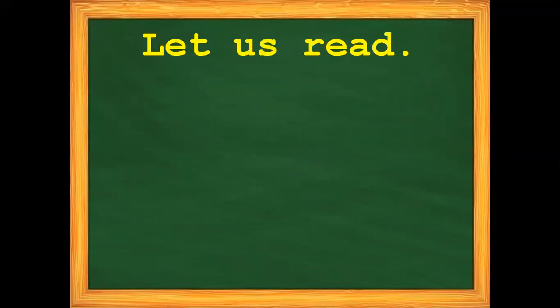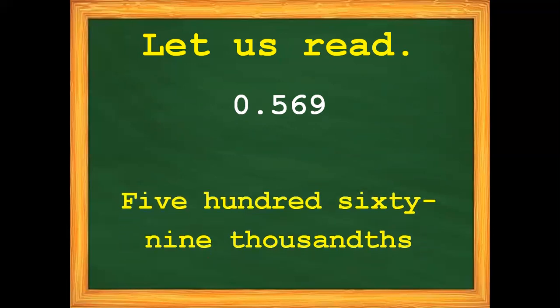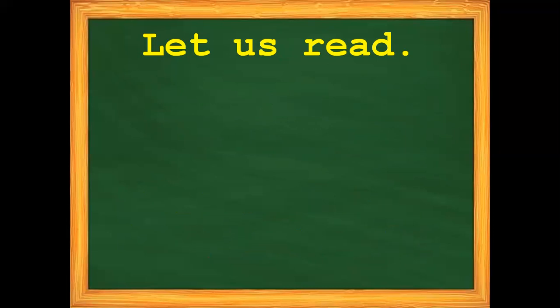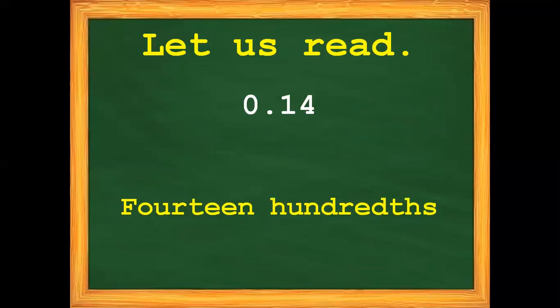Next, let us read the next given decimal numbers. How do we read this decimal? It is read as 569 thousandths. Another decimal — how do we read this decimal number? It is 14 hundredths.